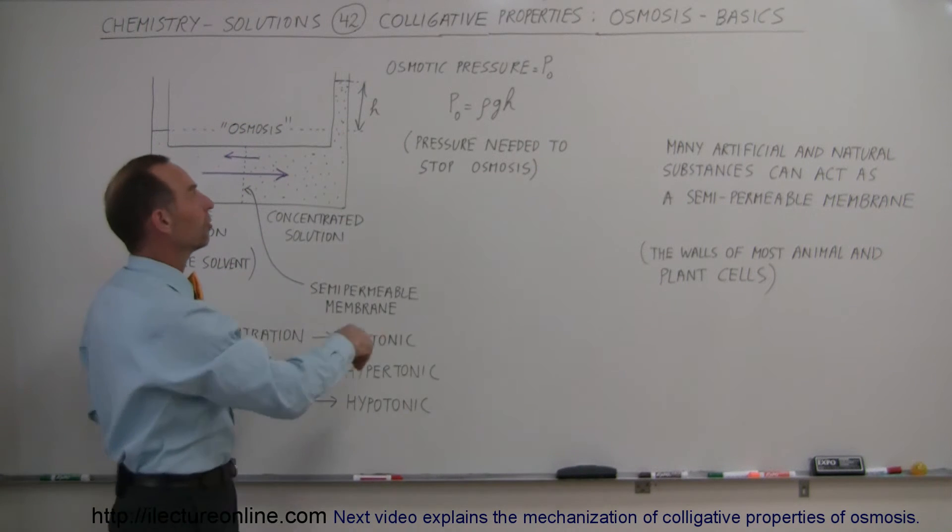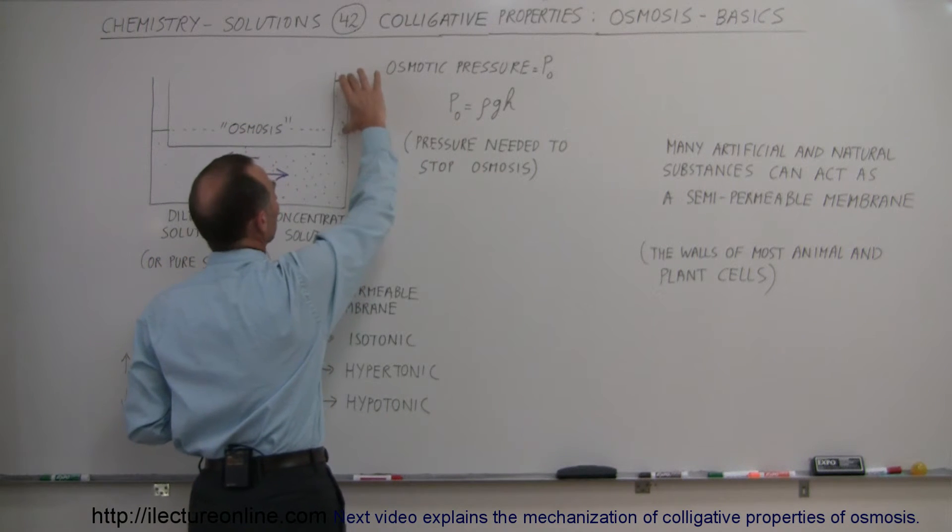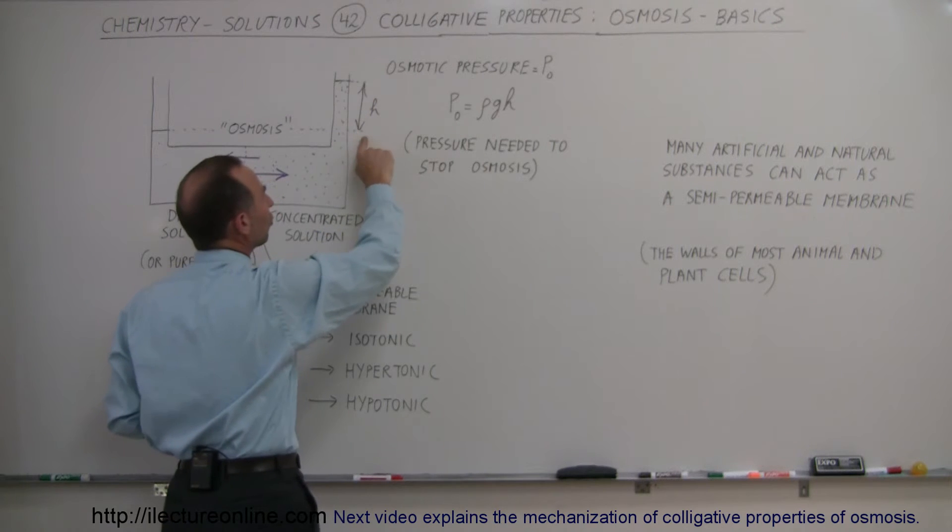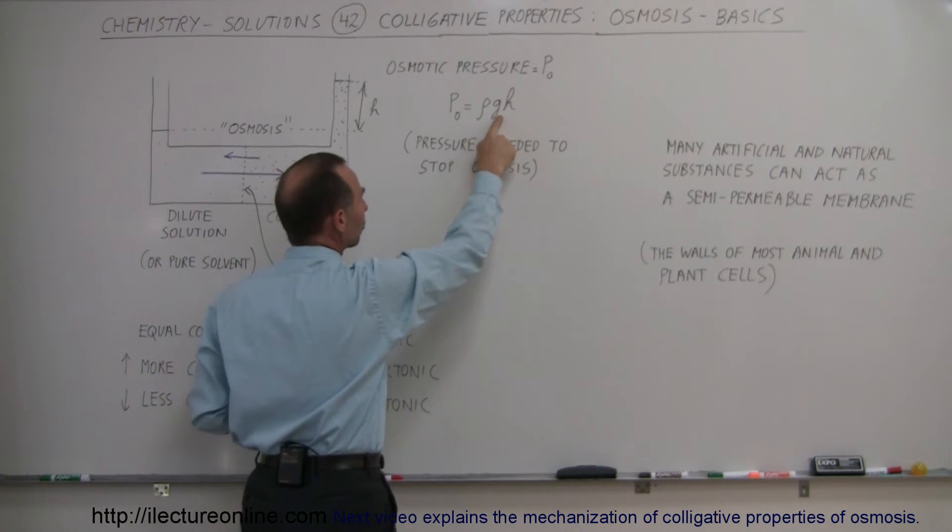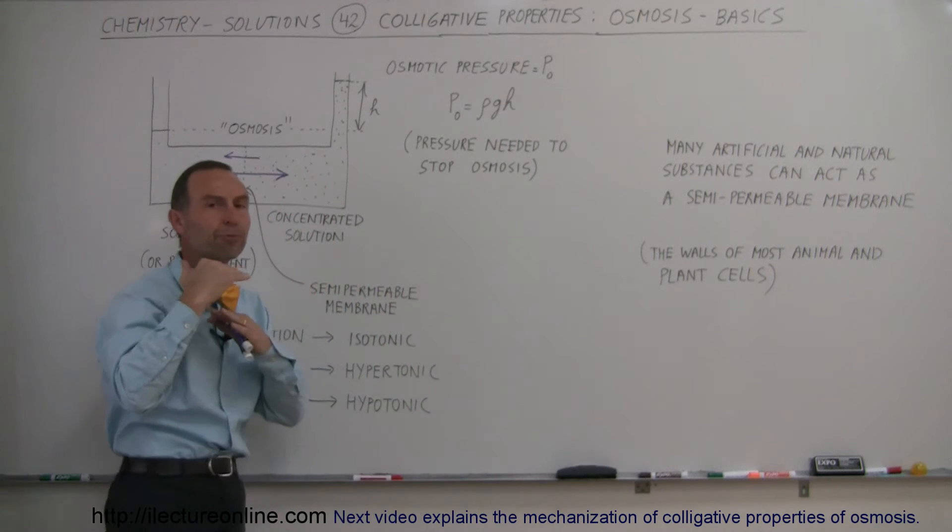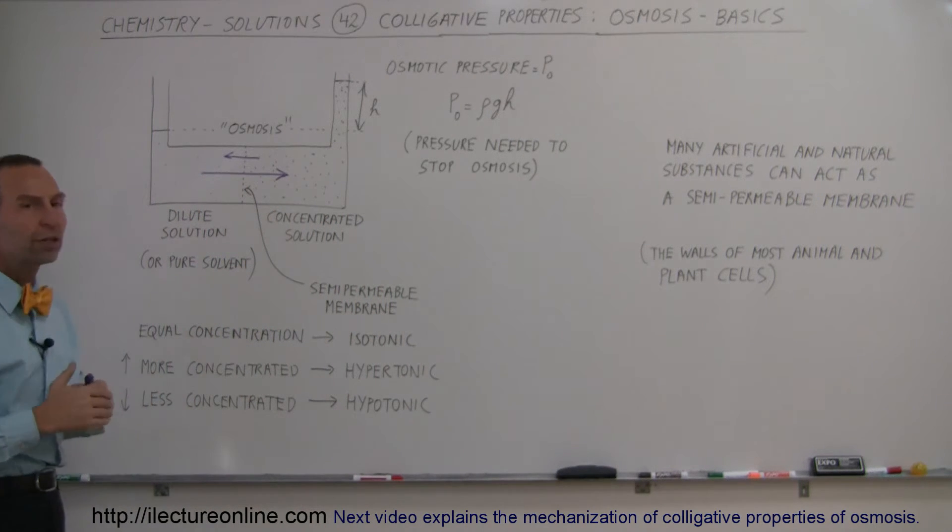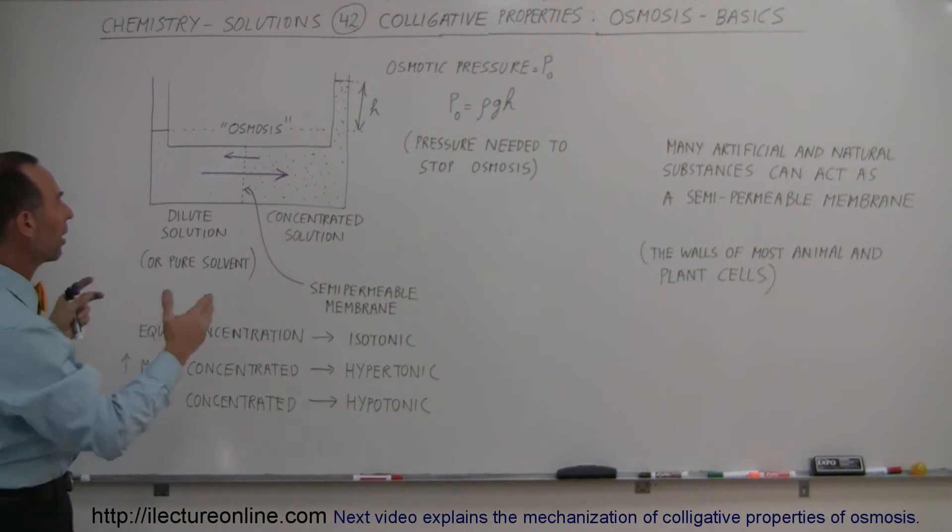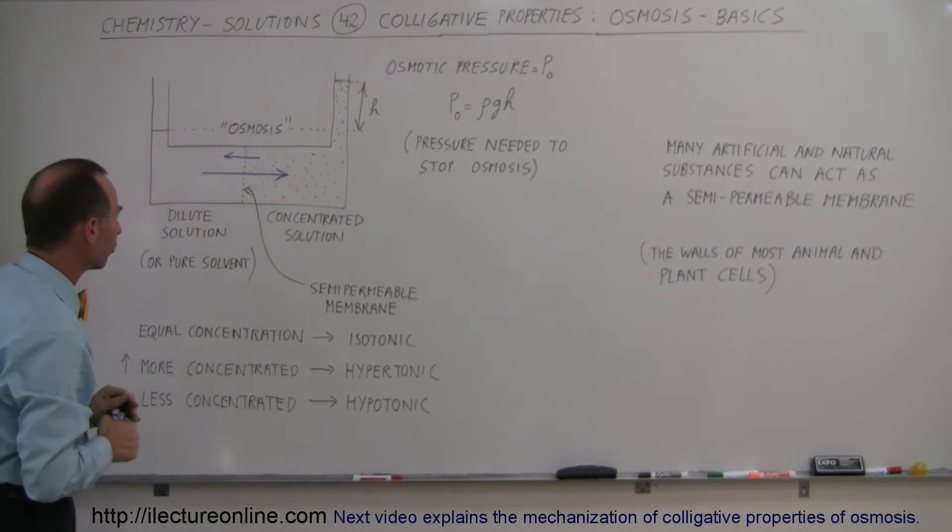And if you go back to your basic physics, you know that the pressure caused by a column of water or column of solution is equal to the density of the solution times acceleration due to gravity times the height. So that would be the pressure difference. That's called the osmotic pressure caused by this procedure, this osmosis.